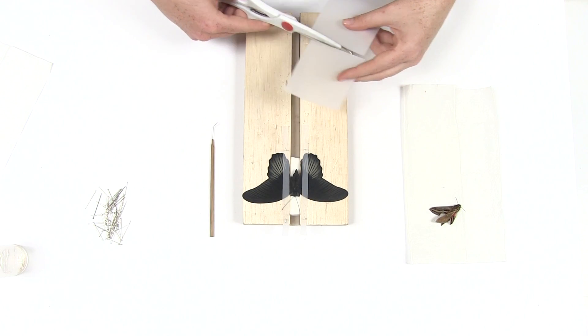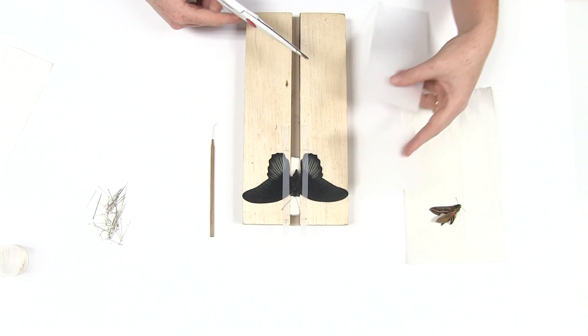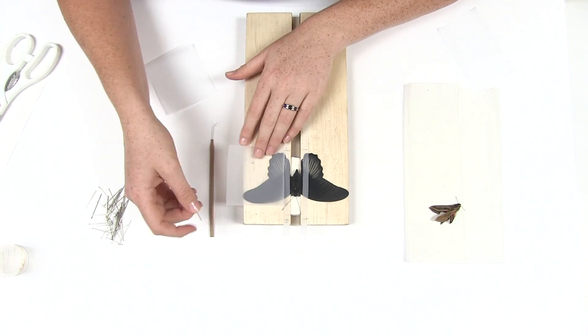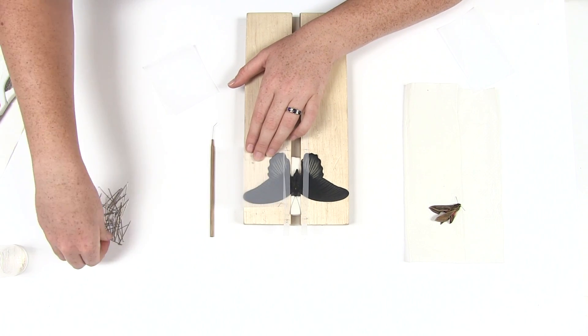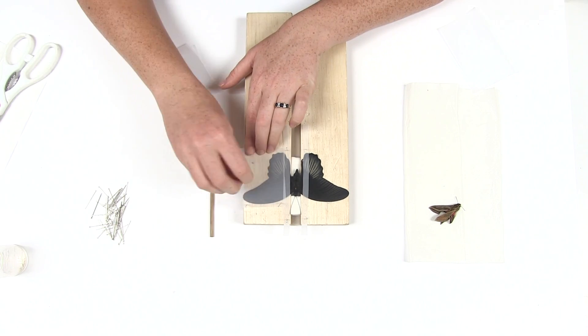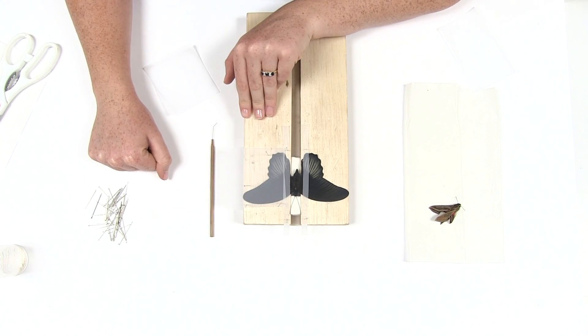Cut two squares of transparent paper which are slightly larger than the wings. Pin the paper on top of the wings with straight pins so that the wings do not curl. Never put pins through the wings themselves. This is how it should look.